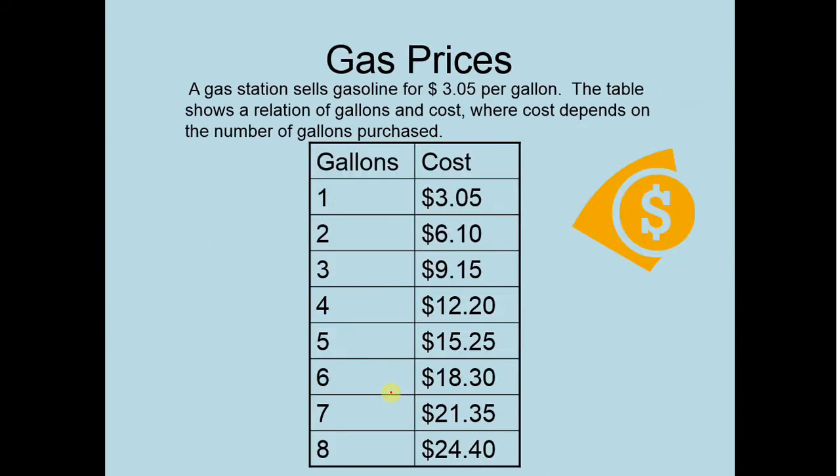So let's take a look at this gas prices problem. A gas station sells gasoline for $3.05 per gallon. The table shows a relation of gallons and cost, where cost depends on the number of gallons purchased. So our input values would be our gallons of gas, because cost is related to how many gallons I buy, right? If I buy 2 gallons, it's going to cost me $6.10. $6.10 does not cause me to buy 2 gallons. It's the other way around.